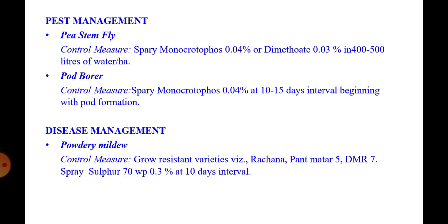Pest management: pea stem fly, which is controlled by spraying Monocrotophos at the rate of 0.04% or Dimethoate 0.03% in 400 to 500 litres of water per hectare. Pod borer is controlled by spraying Monocrotophos 0.04% at 10 to 15 day intervals, beginning with pod formation.